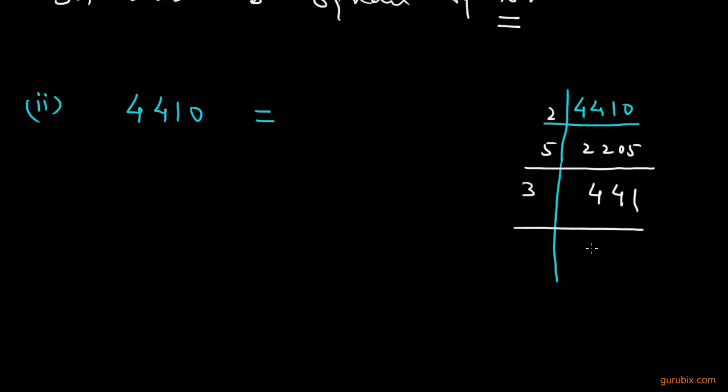And this number can be divided by 3 to get 147. And this number can also be divided by 3 to get 49, which gives us 7.